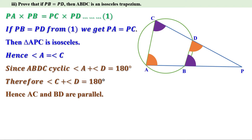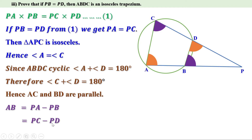Now let us look at the other pair of opposite sides AB and CD. AB can be written as PA minus PB. But we have seen that PA and PC are equal and PB and PD are equal. So let me replace PA by PC and PB by PD — this gives PC minus PD, which equals CD. So AB equal to CD. That means the other pair of opposite sides are equal. Therefore, it is an isosceles trapezium.